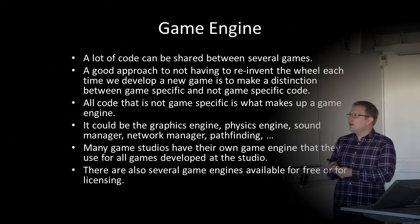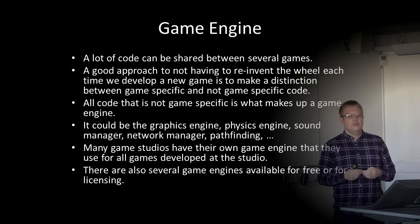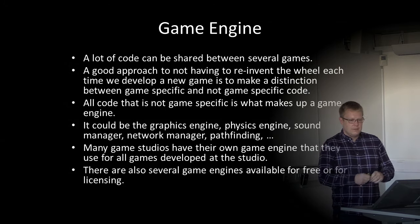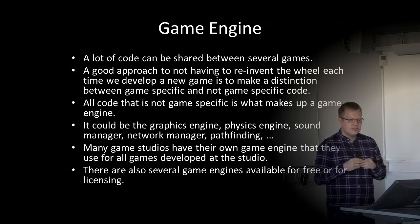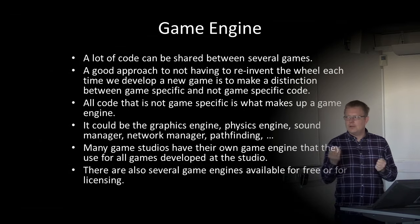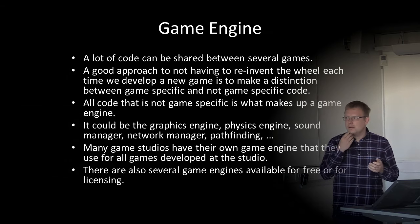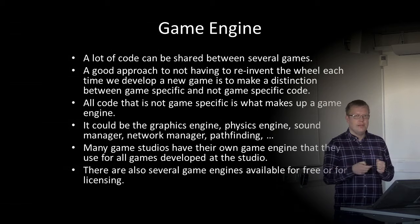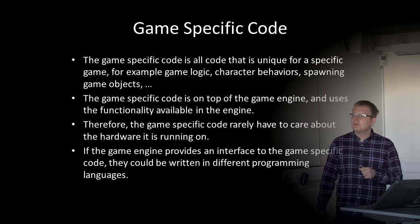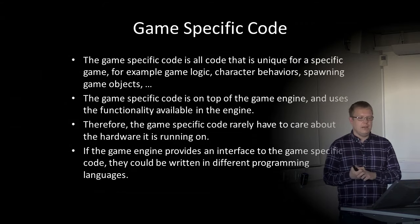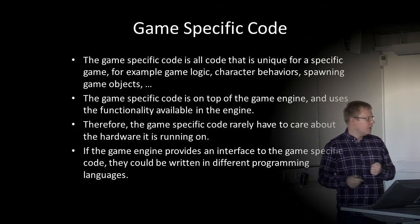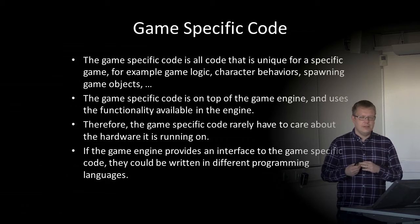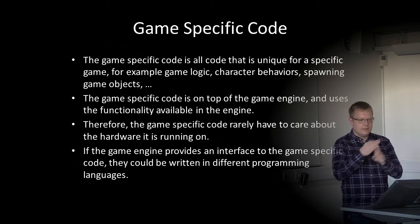To make it easier, a lot of code can be shared between several games. A good approach is that we don't reinvent the wheel each time. We make a distinction between game-specific code and non-game-specific code. All code that is not game-specific makes up our game engine — it could be a graphics engine, physics engine, sound manager, network manager, pathfinding, and more. Many game studios have their own engine, and there are also several available for free or for licensing. The game-specific code is all code unique to a specific game: the game logic, character behaviors, where objects spawn.